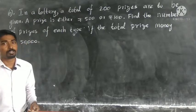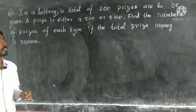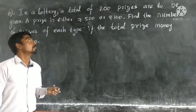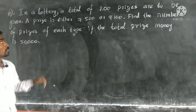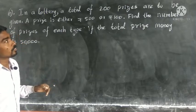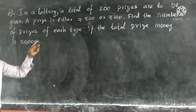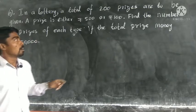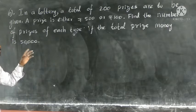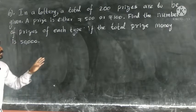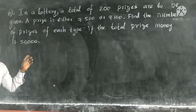Hello students, welcome to video class. Today we are going to learn some problems from exercise 6.4. Question number 6 in your lottery: a total of 200 prizes are to be given. Your prize is either 500 rupees or 100 rupees. Find the number of prizes of each type if the total prize money is 50,000.